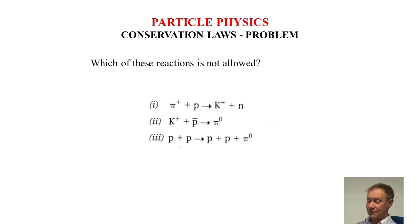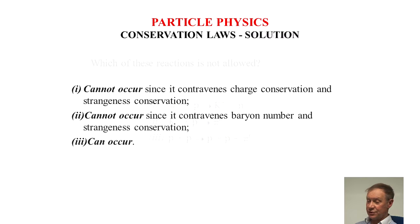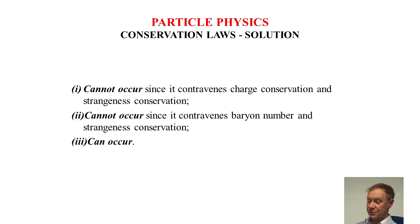Solution to the answers for the previous problem. One cannot occur because it contravenes charge conservation and strangeness conservation. The charge is easiest one to see normally but just to back it up you can show the strangeness is not conserved. Number two cannot occur since it contravenes baryon number and strangeness conservation. And number three can occur.